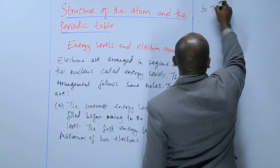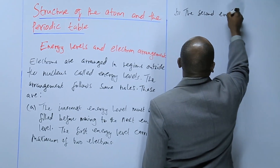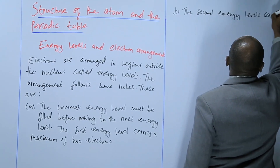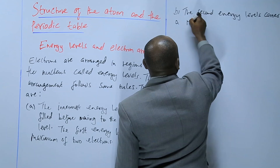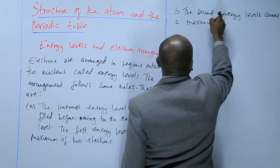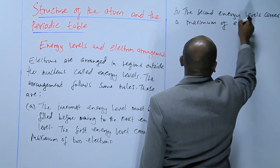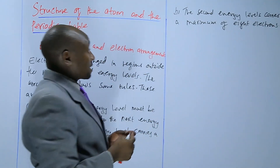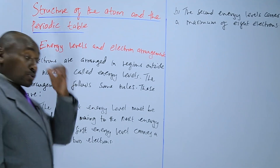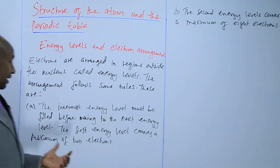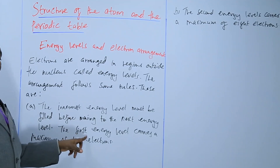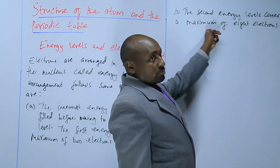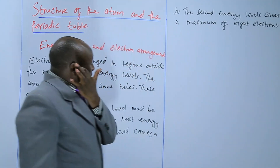Moving to the second energy level, it also has its maximum. This one carries a maximum of eight electrons — it cannot go beyond that. So if the electrons are ten, the first two will occupy the first energy level and the remaining eight will occupy the second energy level.